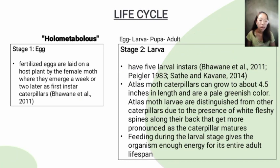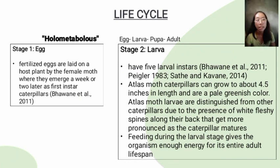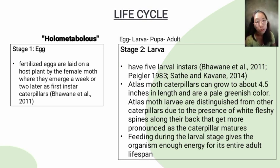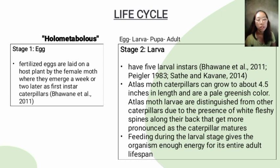Moving on to its life cycle: Saturniidae undergo complete metamorphosis, meaning they are holometabolous, undergoing four stages — the egg, larva, pupa, and adult.